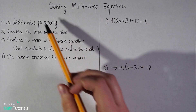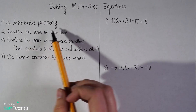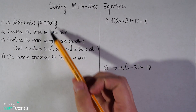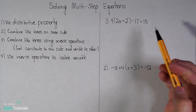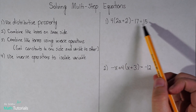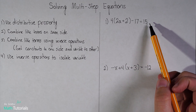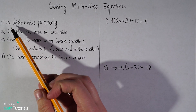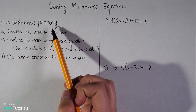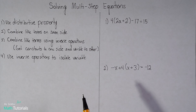Looking at this first example, we're going to get to this list of steps in just a second. We're going to follow this as we solve. So in number one I see that I've got an equation set up here. In my first step: use the distributive property. I want to get rid of any parentheses that are currently in the equation.